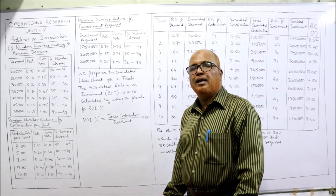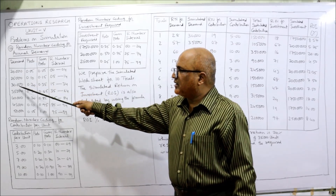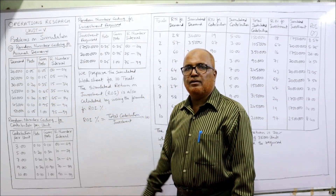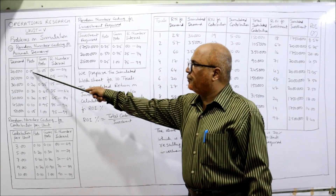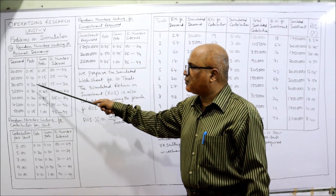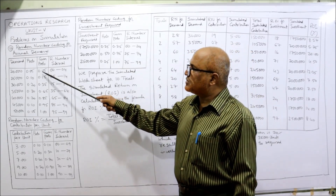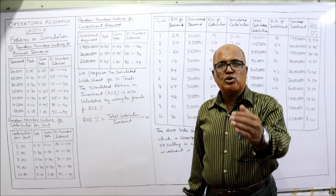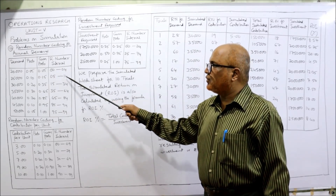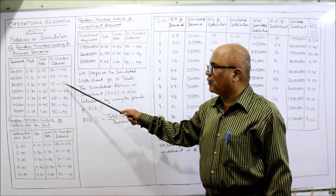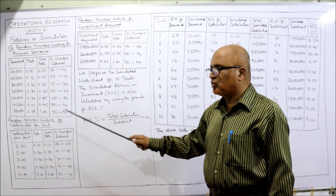First, we build the random number interval for demand. The demand values are 20,000, 25,000, 30,000, 35,000, 40,000, 45,000, and 50,000. We calculate cumulative probability: 0.05, then 0.05 + 0.10 = 0.15, then 0.35, and so on. The random number intervals are: 00–04, 05–14, 15–34, 35–64, 65–84, 85–94, and 95–99.